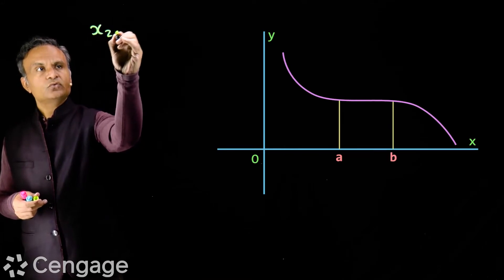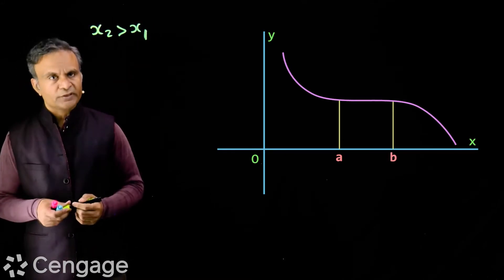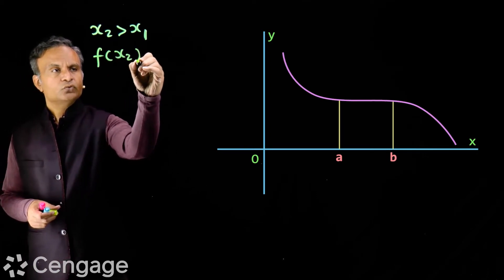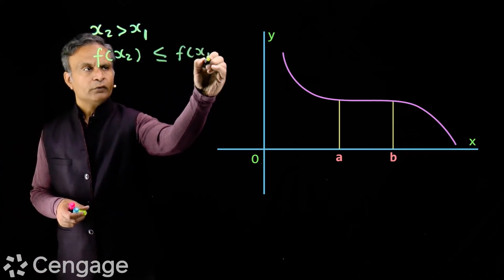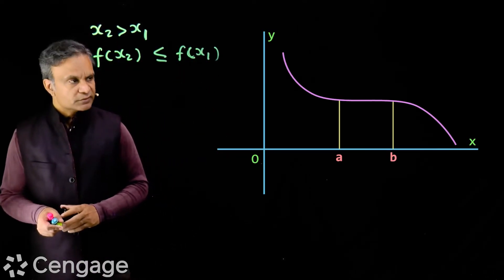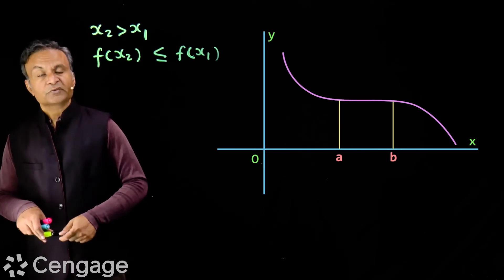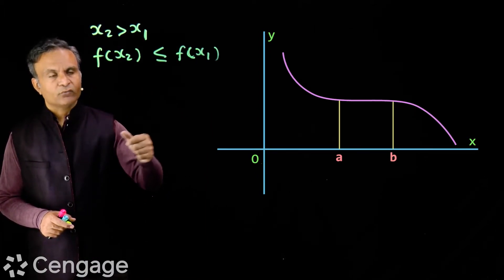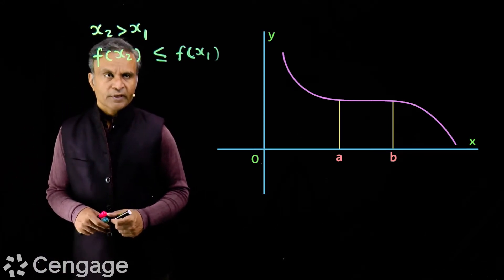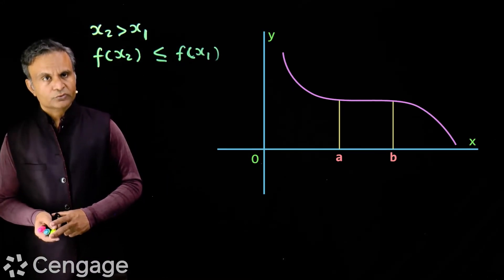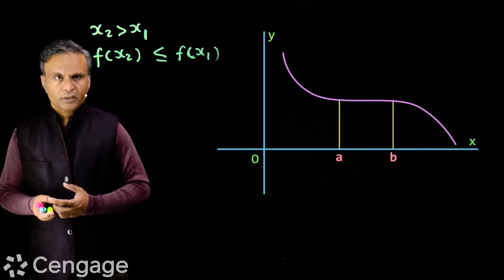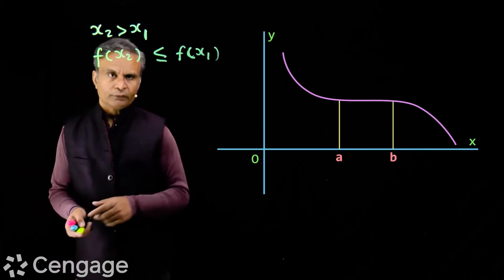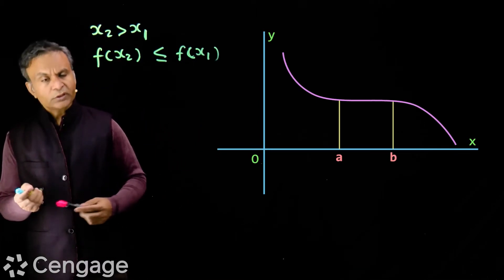If x2 is more than x1 and x1, x2 belong to the domain of the function, then we will have f(x2) less than or equal to f(x1). If x1 and x2 are between a and b then f(x2) equals f(x1), and in all other cases f(x2) is less than f(x1). This function is called a decreasing function.